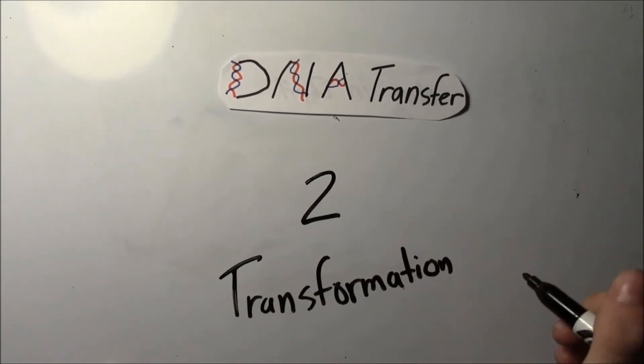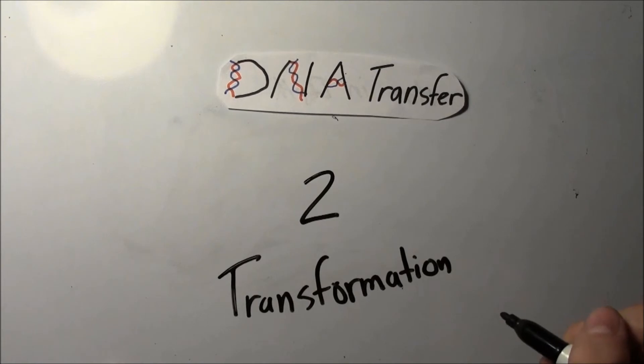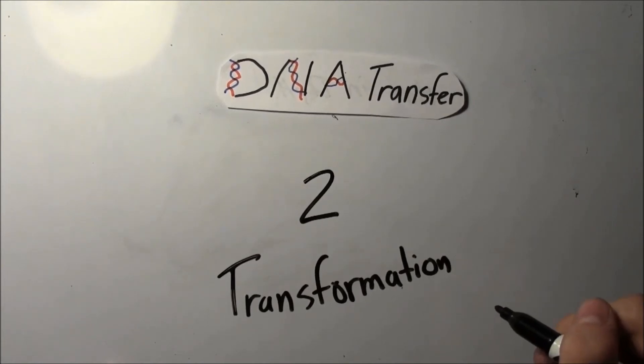The next form of DNA transfer is transformation, which is the genetic alteration of a cell resulting from the uptake or incorporation of foreign DNA into its own. The DNA that is taken up is free floating and can be plasmids or DNA that was released from a cell that had recently died.